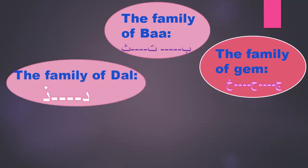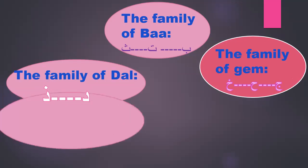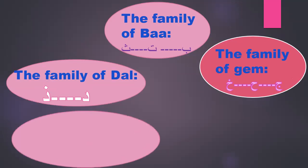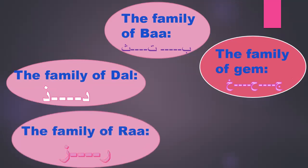The family of Dal has 2 letters: Da and Za. The family of Ra has 2 letters: Ra and Za.